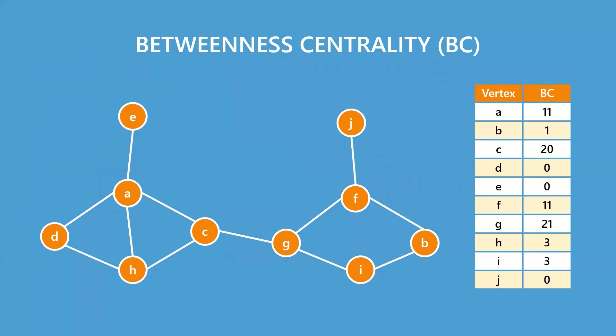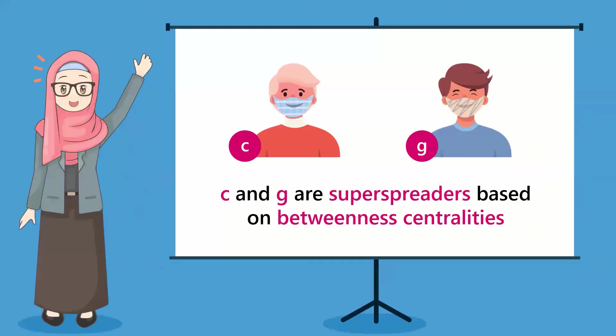We can rank by betweenness centrality from largest to smallest. C and G are now top of the chart. Therefore, we can use betweenness centrality to prove our accusation of C and G as the super spreaders.